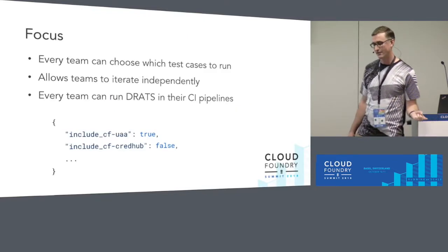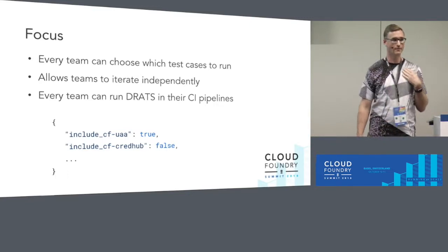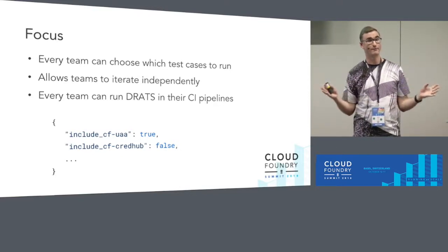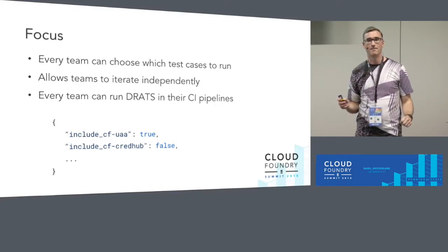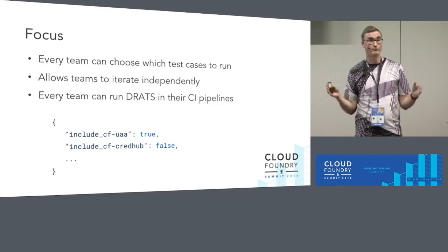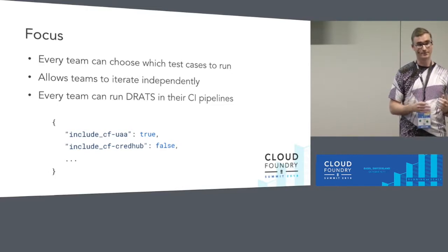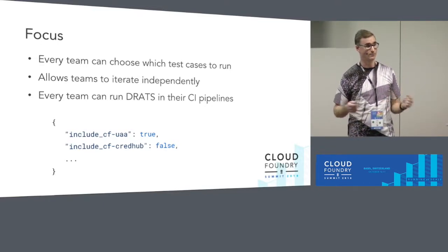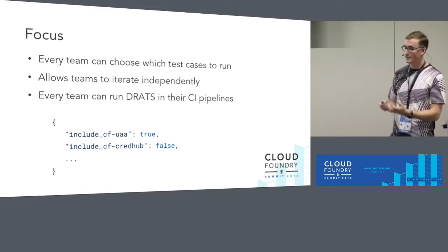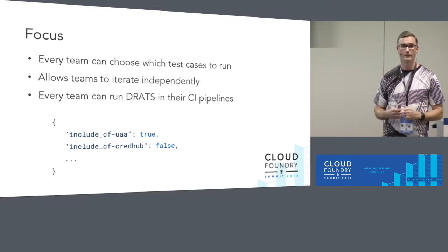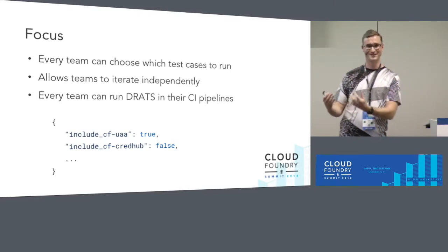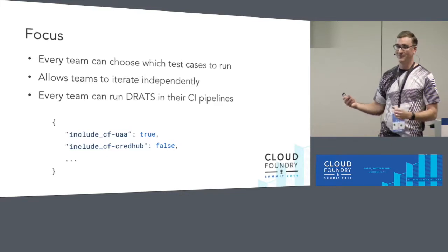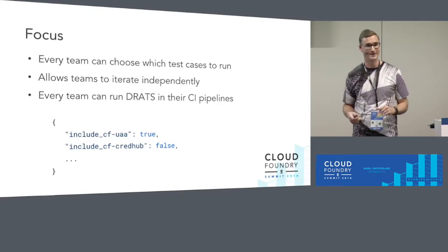I talked about focus. If I'm in the UAA team, I just want to run my test case in my pipeline — I don't want to run everyone else's test case because that's too much noise. At an acceptance test level like this, you can get slow feedback, and you really want to minimize the impact of running these tests. In the config that DRATS takes, there are essentially Boolean flags to say which test cases you want to run. It means every team can independently work on their contribution to disaster recovery without interrupting the other teams. And as Emmanuel said, when we're across many time zones, it's vital that we can iterate independently.